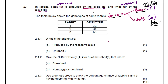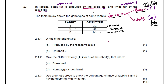Going back to the question, the table below shows the genotypes of some rabbits. You are given three rabbits: rabbit one, two, and three, along with the genotype for each rabbit. You can also write down the phenotype to make it easier. So capital B capital B gives black fur color. Rabbit two, capital B small b, is also black. And rabbit three, small b small b, is white.